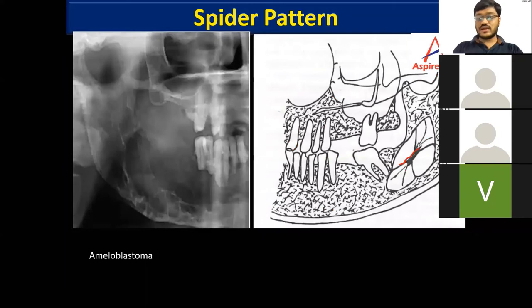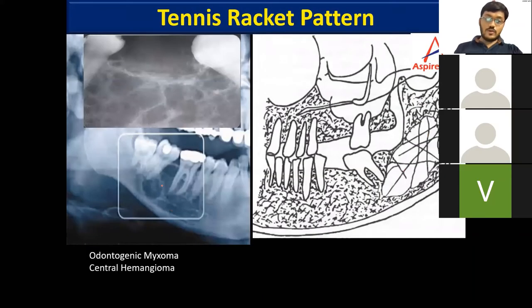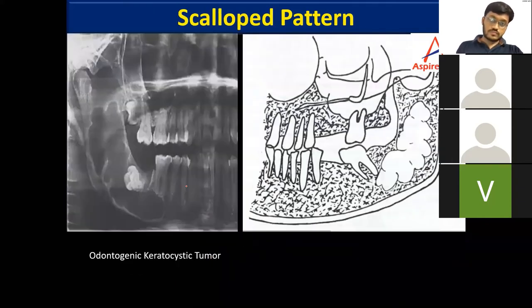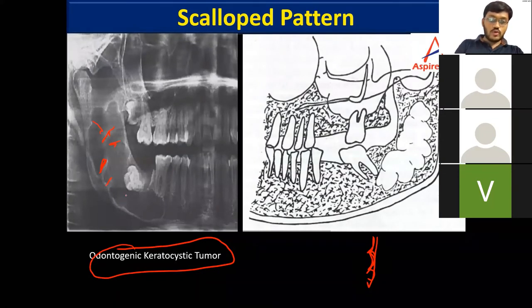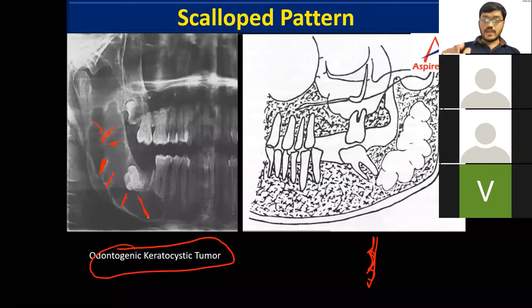The spider pattern is exclusively seen in ameloblastoma, with multiple septa resembling a spider. The tennis racket appearance is seen mostly in myxoma or sometimes central hemangioma, where the septa are at 90 degrees to each other. The scallop pattern is important: OKC is a unilocular cyst, but its scalloping of bone causes indentations that appear as radiopaque lines resembling septa — this is a false multilocular appearance and should not be confused with true multilocularity.